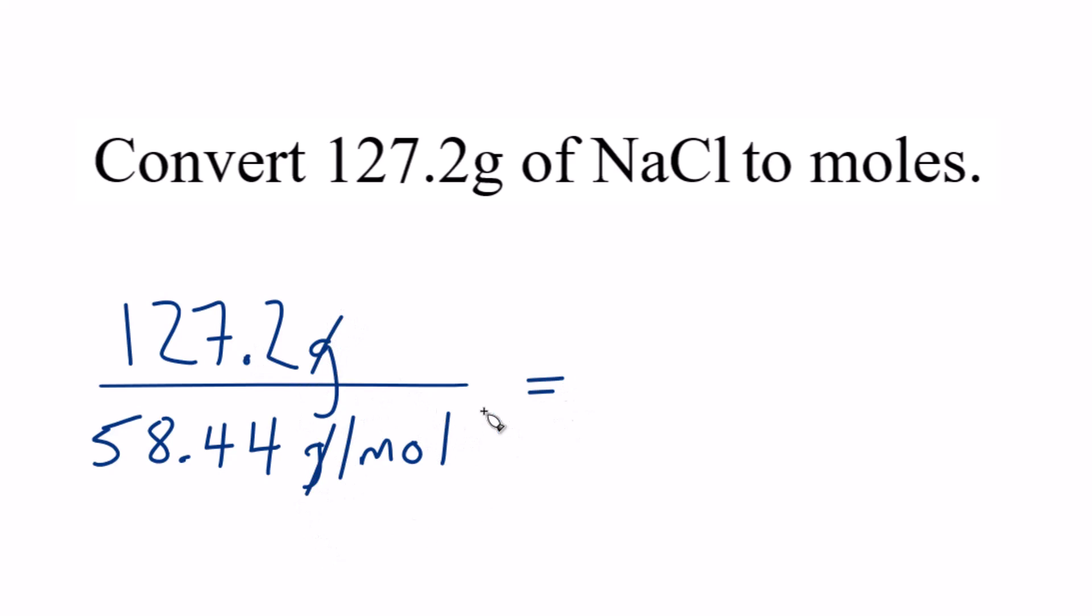They cancel out, and these moles will work out just to give us moles. So 127.2 divided by 58.44, we get 2.177 moles of NaCl.